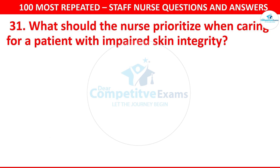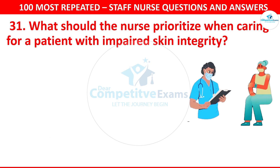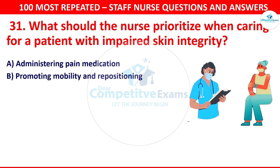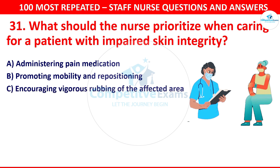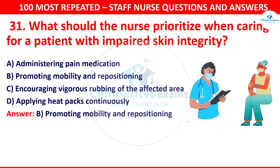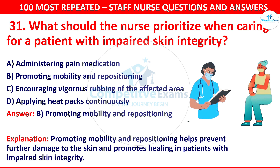Question number 31: What should the nurse prioritize when caring for a patient with impaired skin integrity? Options are administering pain medication, promoting mobility and repositioning, encouraging vigorous rubbing of the affected area, or applying heat packs continuously. The correct answer is promoting mobility and repositioning, which helps prevent further damage to the skin and promotes healing.